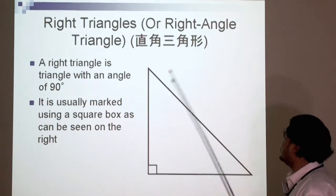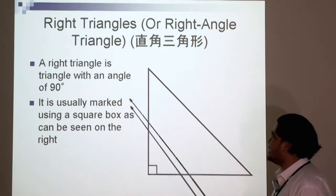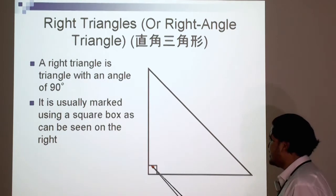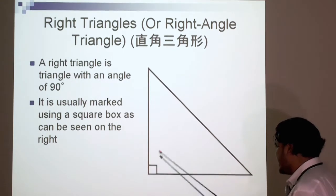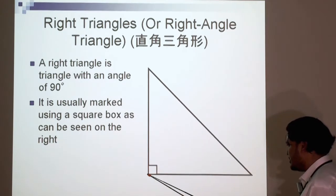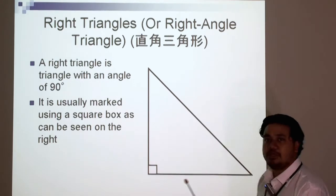A right angle triangle, or right triangles, as they are sometimes known. A right triangle is a triangle with an angle of 90 degrees. You notice that the 90 degree angle is usually marked with a small square box in the corner. So this is what you call a right angle triangle. More on that later.